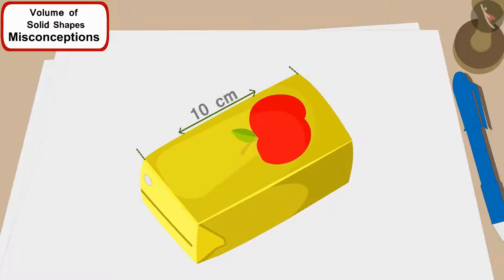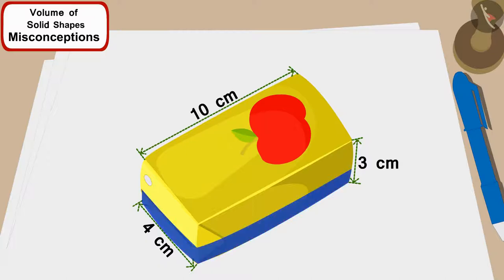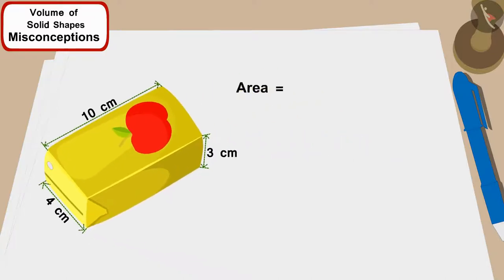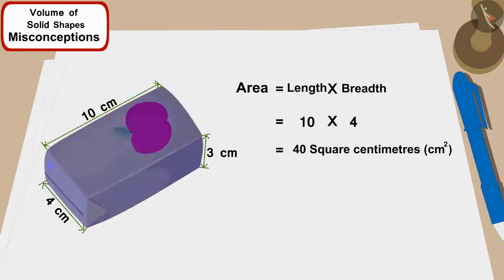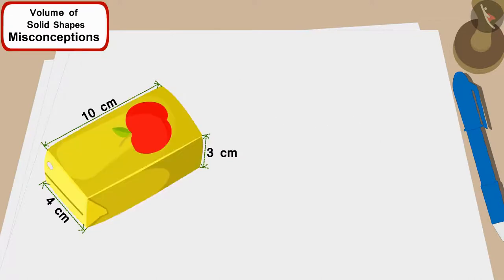Each juice box has length of 10 centimeters, width of 4 centimeters, and height of 3 centimeters. That means the bottom layer of each juice box, the length times the width, is 10 times 4, which equals 40 square centimeters. Because the height of the box is 3 centimeters, there will be three such layers.